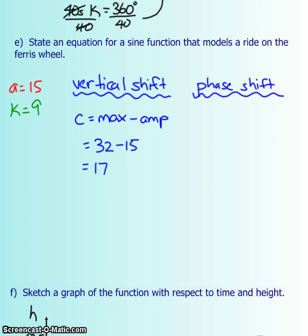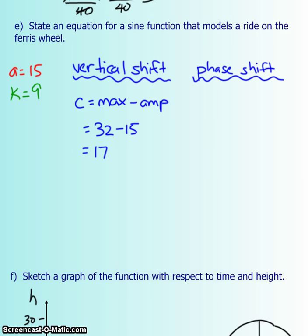And then going back here. The phase shift. This one's a little bit more tricky to understand. So what I'm going to do is I'm going to draw that Ferris wheel again. You know that it's going to take 40 seconds to go all the way around. If I break it down into quarters, that means it's going to be 10 seconds per quarter.